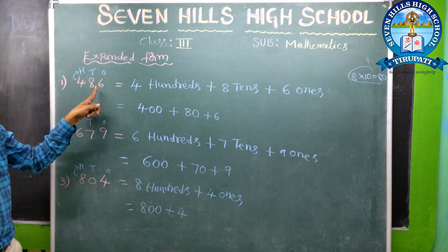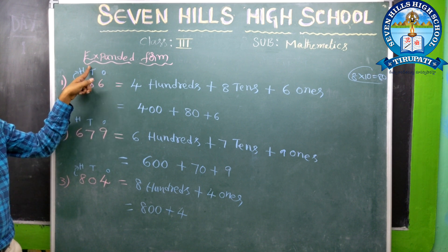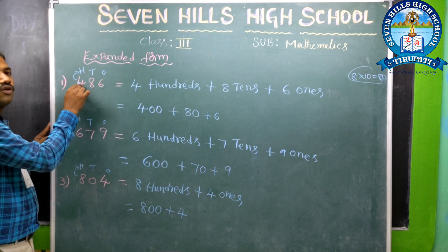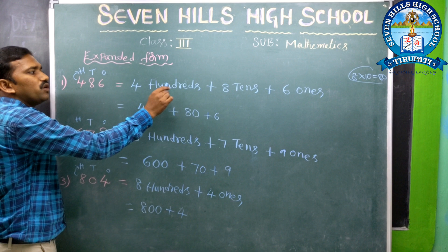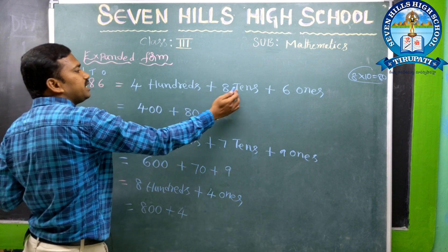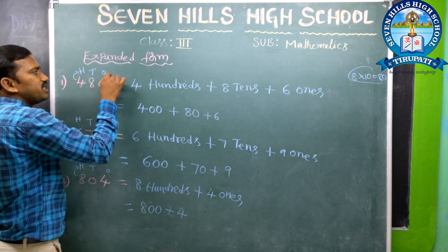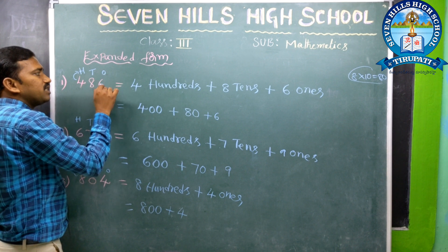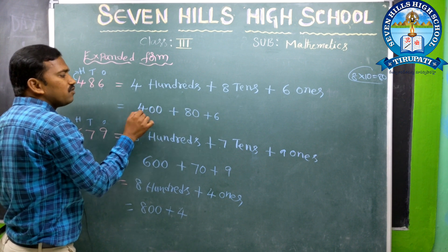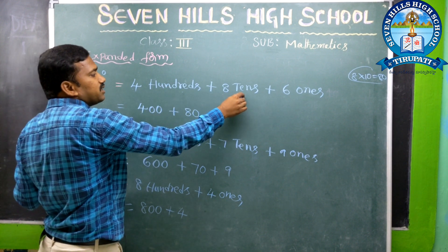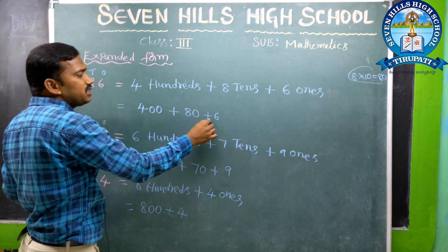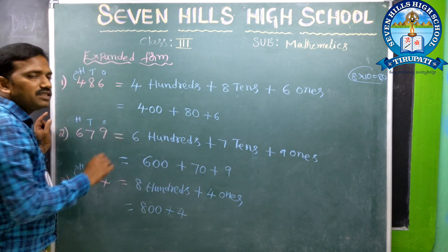Once again: 486. 6 is in the 1s place, 8 is in the 10s place, 4 is in the 100s place. 4 hundreds plus 8 tens plus 6 ones. 4 hundreds means 400, 8 tens means 8 into 10 = 80, 6 ones means 6 into 1 = 6. So this is the expanded form.